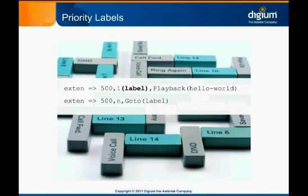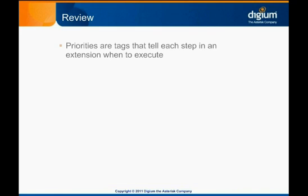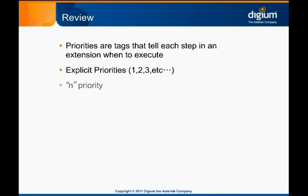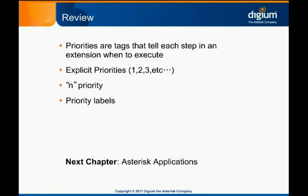Priority labels let you combine the precision of explicit priority numbering with the flexibility of N priorities, so your dial plan can remain easy to modify as it grows in scale and complexity. To review: priorities are tags that tell Asterisk when to execute each step in an extension. You may explicitly number your priorities, but using the N priority instead will allow your dial plan to be more flexible and easier to troubleshoot. Priority labels help you make complex dial plan routing simpler. We now turn to a chapter devoted to Asterisk applications, where we'll discuss the various categories of apps and some examples in each category.